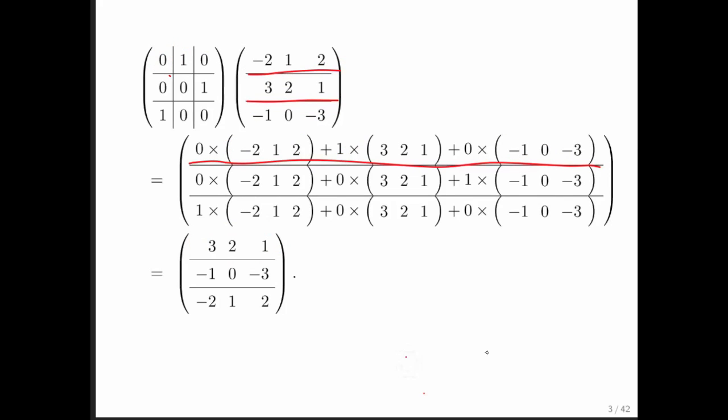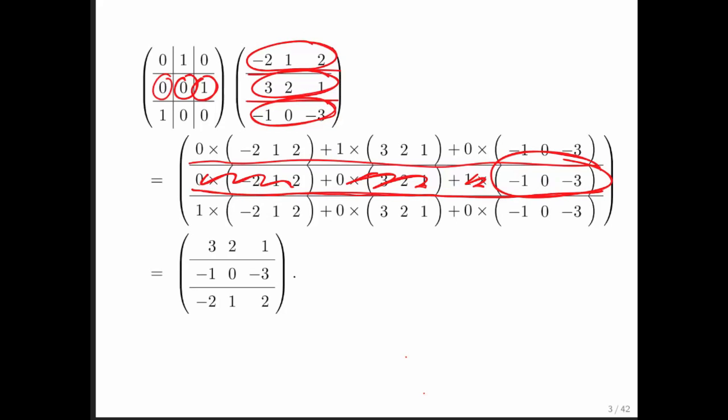Next, we can do 0 times the first row, plus 0 times the second row, plus 1 times the third row. And that's given right here. And what you notice is that this goes away, and that goes away, and that goes away. And all you're left with, again, in this case, is the third row.